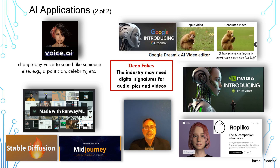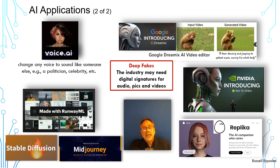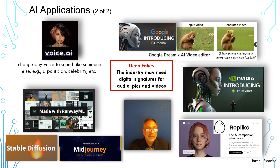Let's look at some other applications — here's where we get into deep fakes, where the industry will need some sort of digital signature to authenticate audio, pictures, and videos published on the internet. Voice AI in the top left gives you the ability to change your voice or any voice to sound like someone in their catalog — a president's voice, a celebrity's voice — and it works live and with recorded voices. Google DreamX allows you to take a video, like a monkey eating a banana, and change it to generate a bear dancing. You really don't know what you're looking at when these deep fakes are used.